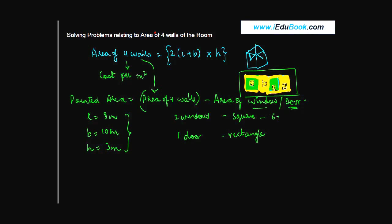These windows are square-shaped, and there's one door which is rectangular. The side of the square is 2 meters. And the door is 3 meters by 2 meters. Now if you are asked to find the painted area, it's obviously going to be the area of the four walls, which is...